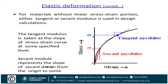For materials without a linear stress-strain portion, either the tangent or secant modulus is used in design calculations. Young's modulus equals sigma divided by epsilon, which equals PL divided by A times delta L. For shear stress and shear strain: when a body is subjected to equal and opposite forces acting tangentially across the resisting section, the stress induced is called shear stress. The modulus of rigidity C is defined by tau proportional to phi, so C equals tau divided by phi.